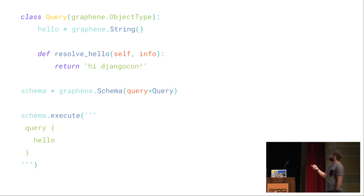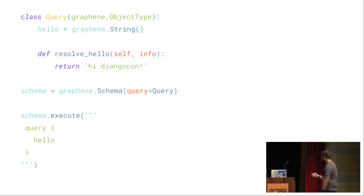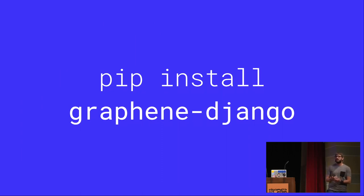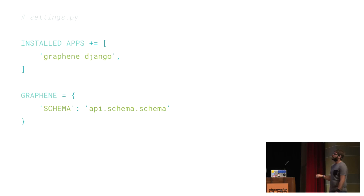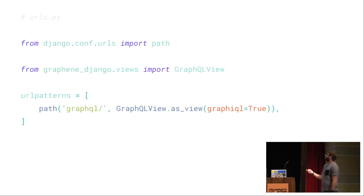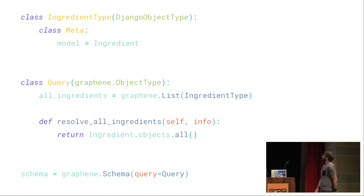For example, we have a field called 'hello' that's a string, and the function returns 'Hello DjangoCon'. Then we get the schema by passing the query to the schema constructor. We can execute queries directly on the schema or use a POST request. There's also Graphene-Django, built by the same team, which has quite a few interesting tools — you add it to INSTALLED_APPS for static files for the IDE, point it to your schema, add the path to your URLs, and enable the GraphiQL IDE. Django object type automatically creates an object type based on a Django model. There's also REST framework integration, which works similarly but currently only for mutations.